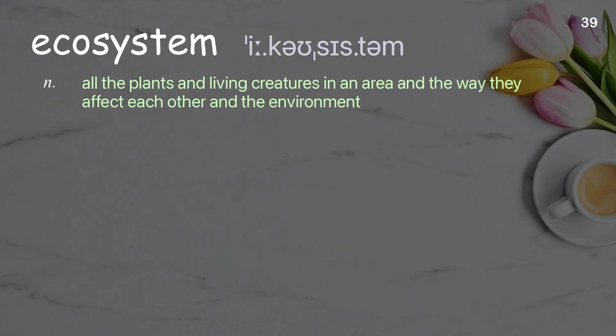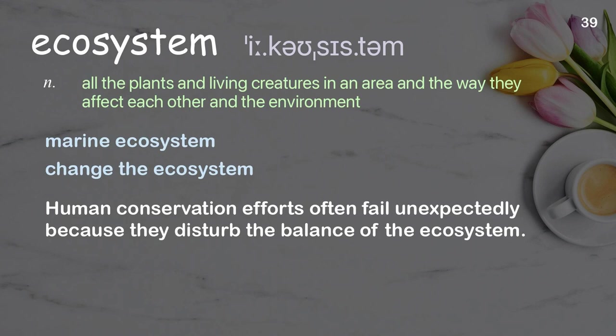Ecosystem: all the plants and living creatures in an area and the way they affect each other and the environment. Examples: marine ecosystem, change the ecosystem. Human conservation efforts often fail unexpectedly because they disturb the balance of the ecosystem.